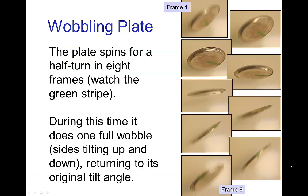So, if you go frame by frame, you'll see that, for example here, the plate is spinning. It might spin a half turn in eight frames, and during that time it does one complete wobble. That is the sides tilting up and down, and then returning to the original tilt angle.